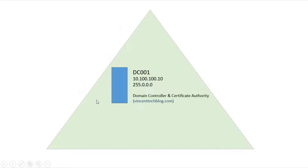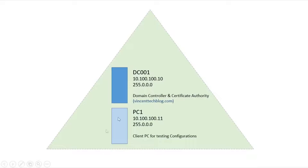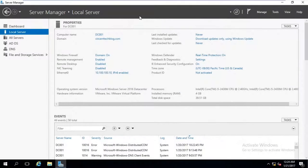Our setup has DC1, which is going to be my domain controller and also my certificate authority. Then I have a client PC running Windows 10 on the same network. That is just the setup, so let's kick start by moving on to DC1 to begin our configuration.